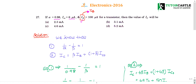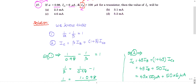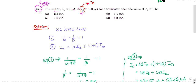As soon as you get this correction, you can easily solve this question. It's a simple formula-based, very easy question. If you know the formula, fine; if you don't, just see the formulas I'll give — a few more formulas will be helpful. You need to know two formulas: one is the relation between alpha and beta, and the other is the IC formula.